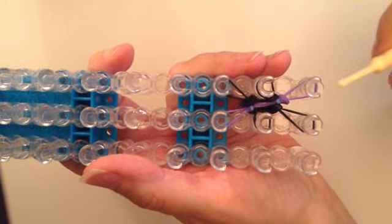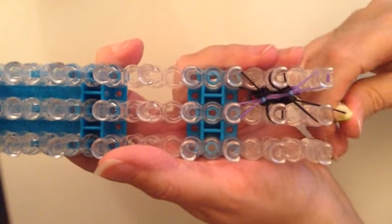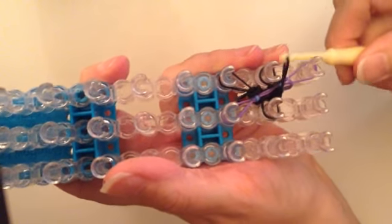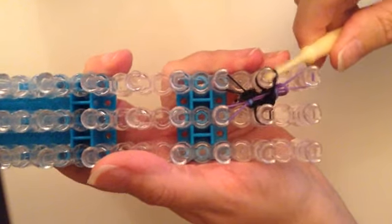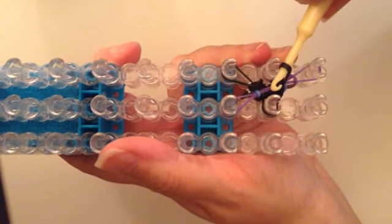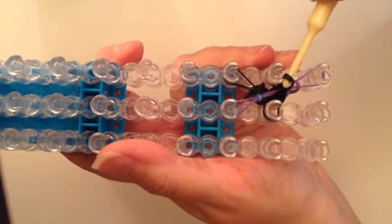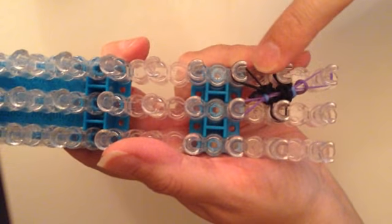And so what you want to do is you want to take this one, and you want to grab the one across from it, and then you want to keep them both on, loop it through, stick it back on the peg.